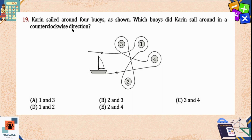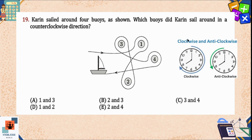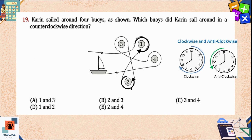Question 19: Karen sailed around four buoys as shown. Which buoys did Karen sail around in the counterclockwise direction? The clockwise direction is highlighted in blue and the counterclockwise direction is highlighted in green. Following the arrows: the first one is clockwise, the second is counterclockwise, the third is also counterclockwise, and the fourth is clockwise. Option B is the correct answer.